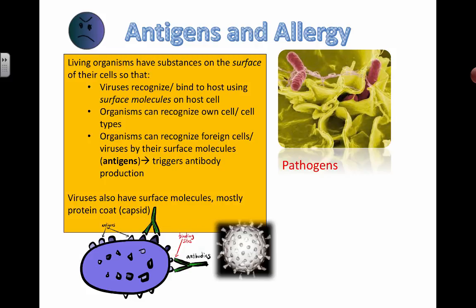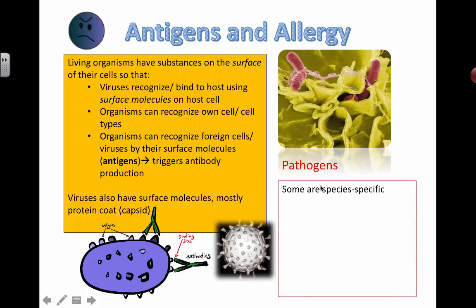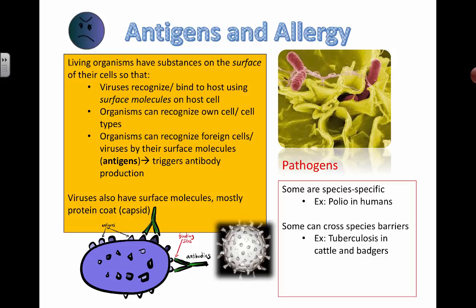Take your time to go over the written notes and make sure these ideas make sense. It's important to know that some pathogens only infect a specific species. One example is the polio virus and how it affects humans only. There are other pathogens that can actually cross between species — for example, tuberculosis being transferred from cattle to badgers.